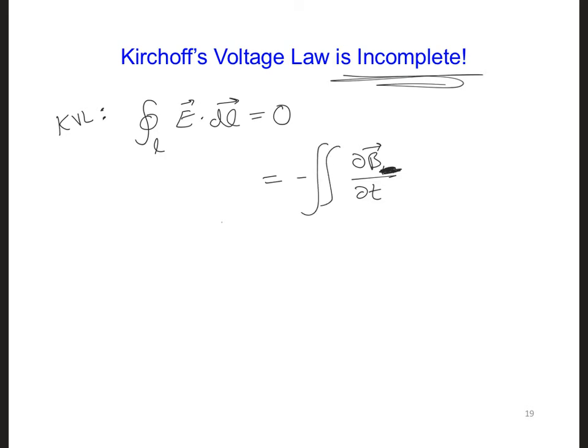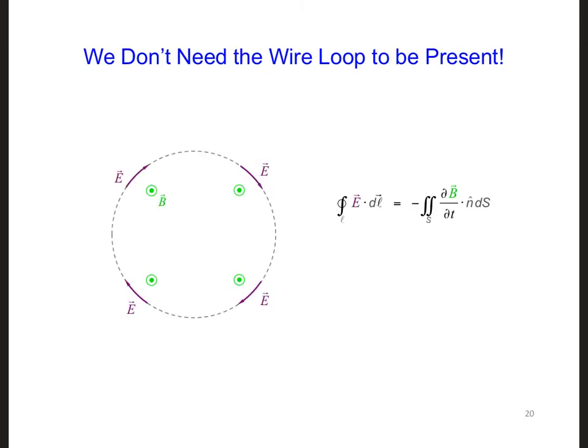So instead of equal to zero, we would have it's equal to minus the surface integral dB/dt dotted with n hat dS. And if we were to remove the wire completely, we would get a more general expression that holds even for free space, where we just have the electric field and the magnetic flux density changing in time. This is Faraday's law in the integral form and the time domain form.